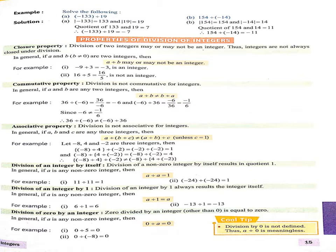Now next property: division of 0 by an integer. 0 divided by any integer other than 0 is equal to 0. अगर हम 0 को divide करते हैं किसी भी integer से तो our answer is always 0. Examples: 0 divided by 5 — our answer is 0. And second, 0 divided by minus 8 — our answer is also 0.